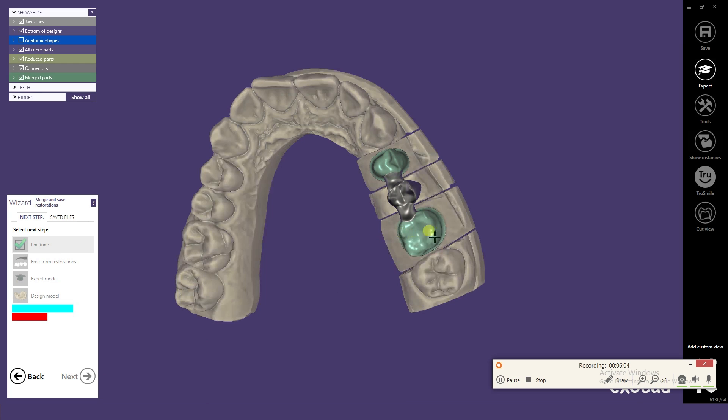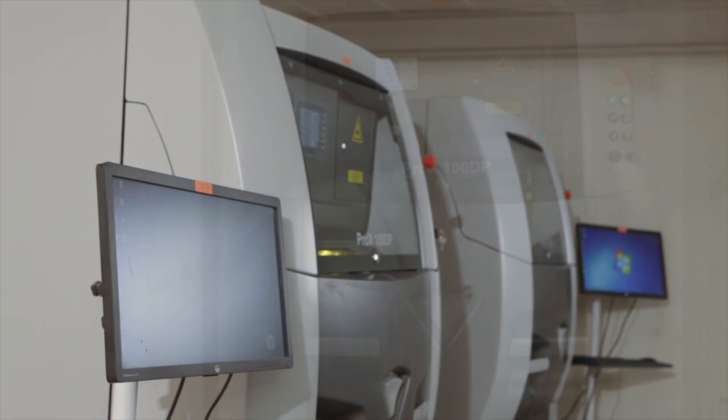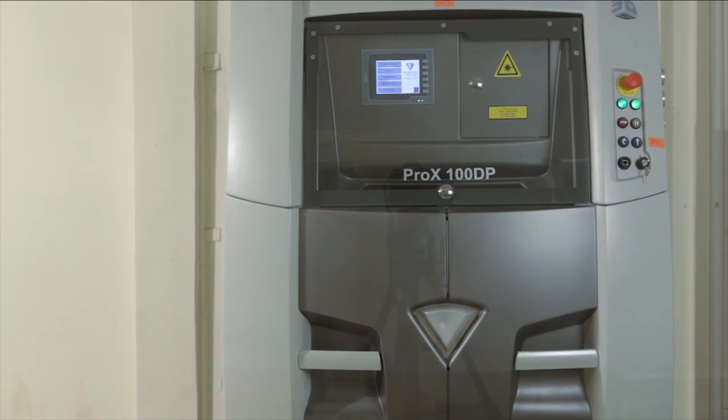This design is then sent to the DMLS unit where the sintering happens. This is what the DMLS machine looks like and this is how the procedure happens.